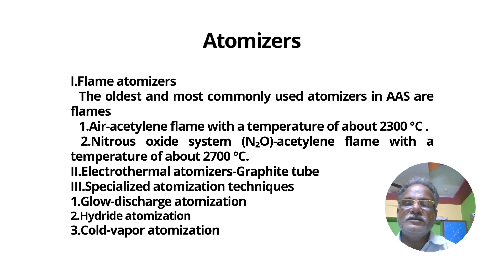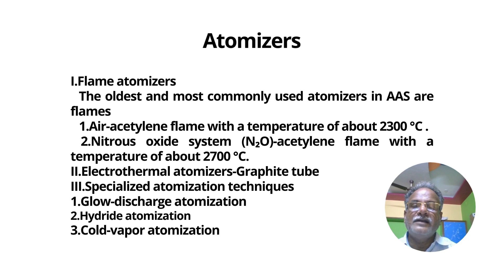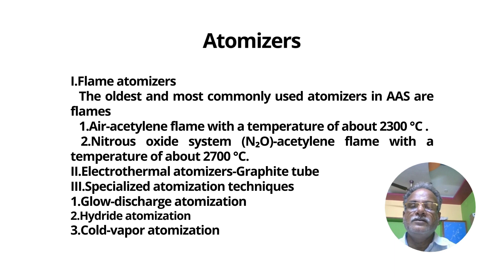The most important component in the atomic absorption spectrometer is the atomizer. There are several types of atomizers: flame atomizers, electrochemical atomizers, and specialized atomization techniques. The oldest and most commonly used atomizers in AAS are flame atomizers. Flames can be generated in two ways: air-acetylene flame and nitrous oxide flame.